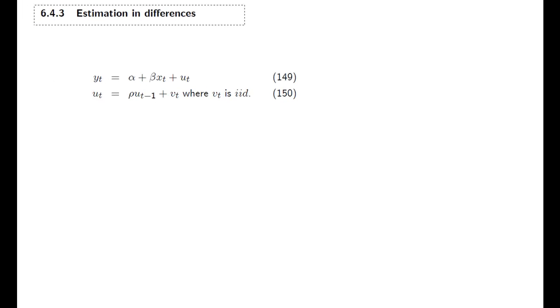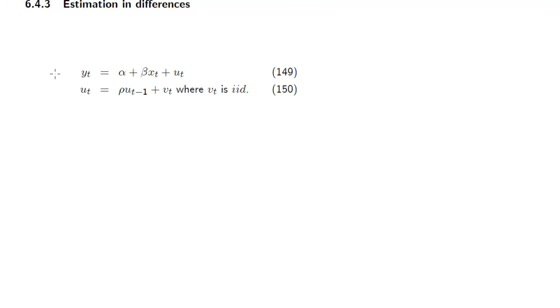So we have our model for a dependent variable yt and that shall be dependent on an exogenous variable xt, an explanatory variable xt, and we have a ut. Let's say that ut is autocorrelated. We have autocorrelated error terms.